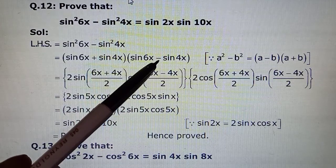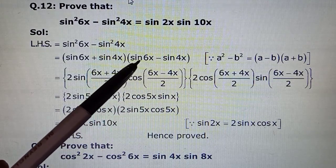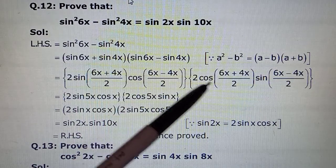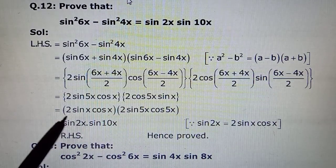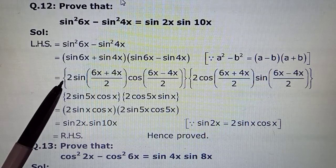And minus sin hota hai to ulta ho jata hai. Cos of the sum and sin of the difference of the angles. If you have learnt your formula you know what is going on.